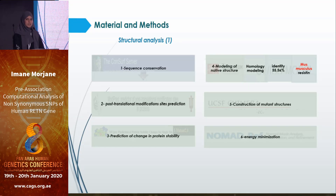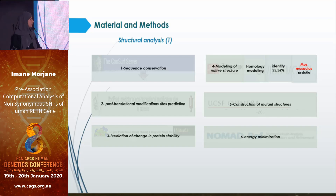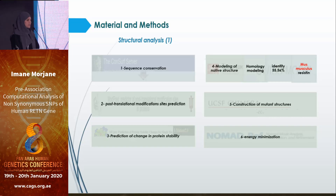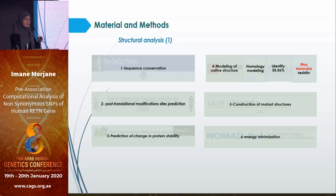We then performed a panoply of structural analyses, starting with conservation prediction using CONSERF, followed by post-translational modification sites. We tested the stability-increasing or -decreasing effects of these non-synonymous SNPs. We constructed a model of the human Resistin protein using homology modeling with the Swiss-Model tool, using the mouse Resistin as template, which shows 55.6% identity with human Resistin. We then constructed mutant structures, each including one SNP, followed by energy minimization to obtain the most stable proteins.